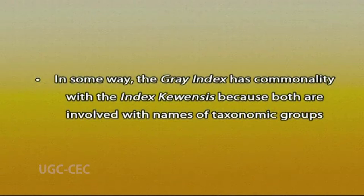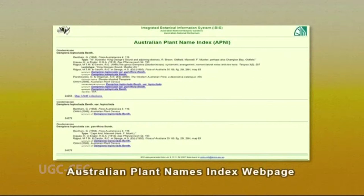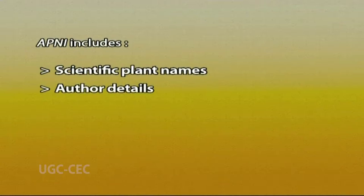In addition to these two main indexes, there is the Australian Plant Names Index (APNI), which records names for all Australian plants compiled since 1973. The APNI includes many names not included in either Index Kewensis or the Gray Index. In recent years, the APNI has also incorporated names for cultivars derived from the Australian flora. Information available from APNI includes scientific plant names, author details, original publication details, typification details, state distribution in Australia, and other relevant comments and notes.